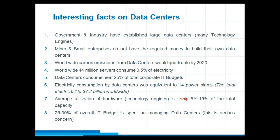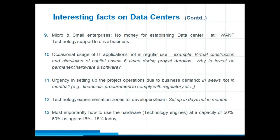Imagine how much carbon emissions and impact there will be on the grid. Another important thing: the average utilization of hardware — the technology engines — is only 5 to 15% of capacity. Because those engines are built for maximum capacity. In a business, the demand is not constant every day or every month — there are peaks and downturns. But these technology engines and hardware are designed for peaks, so the average utilization in a year is only 5 to 15%, which is another serious concern.